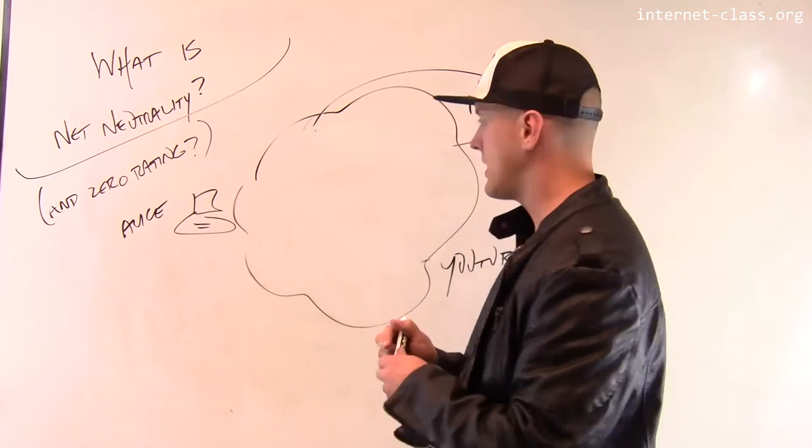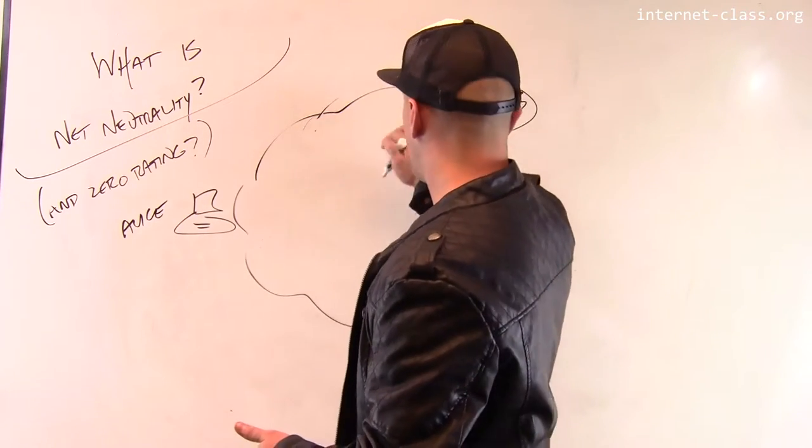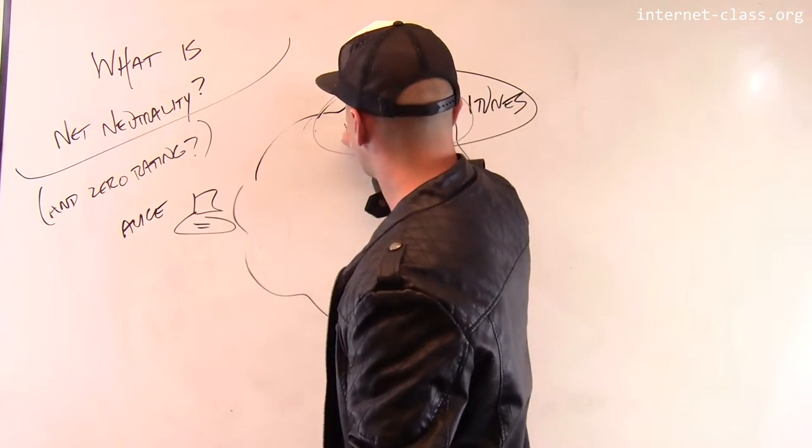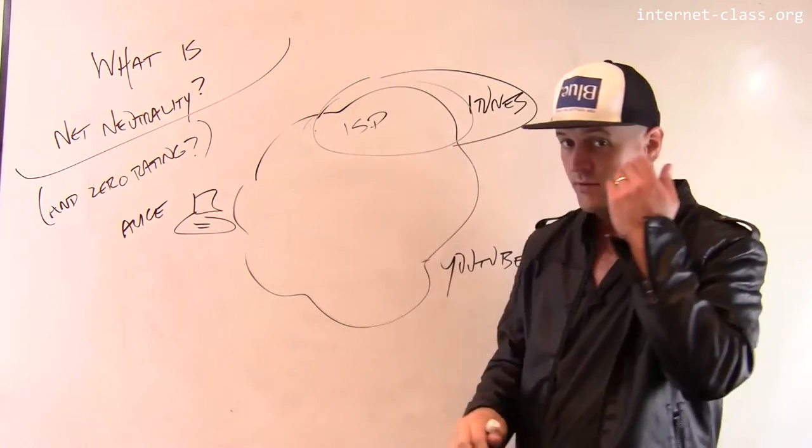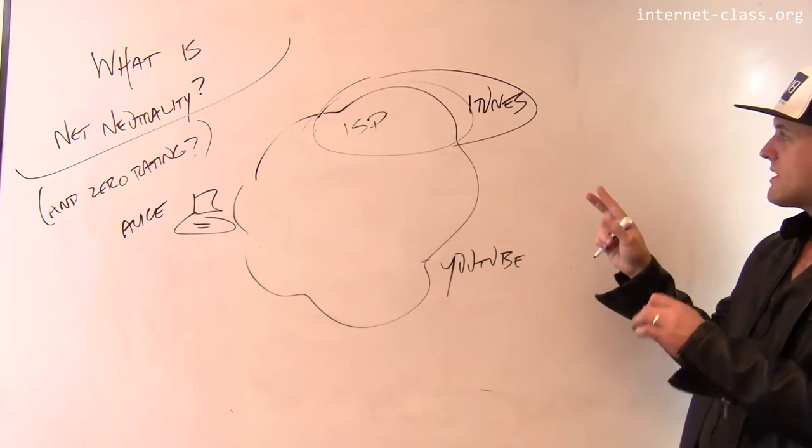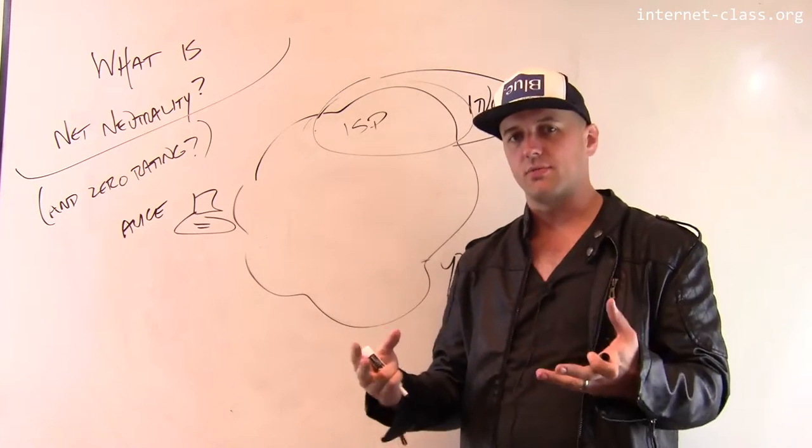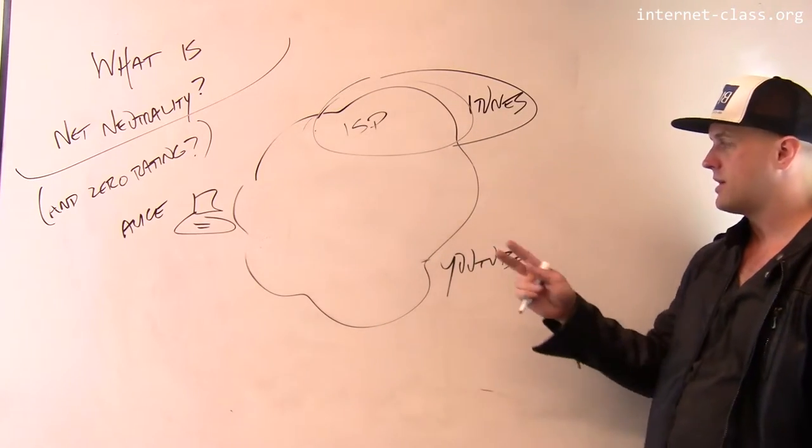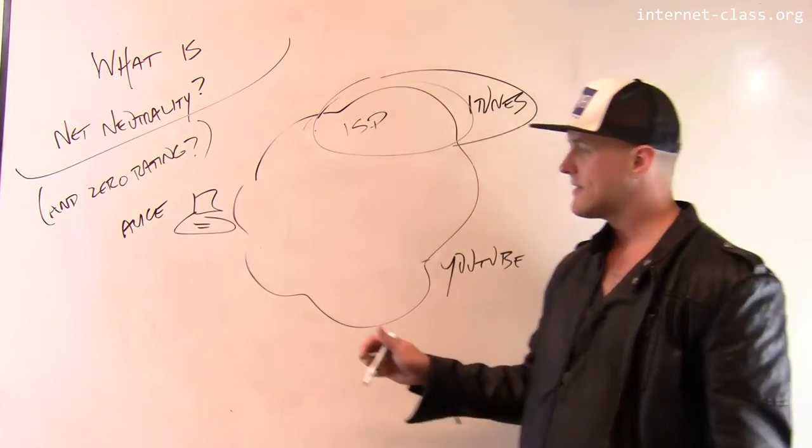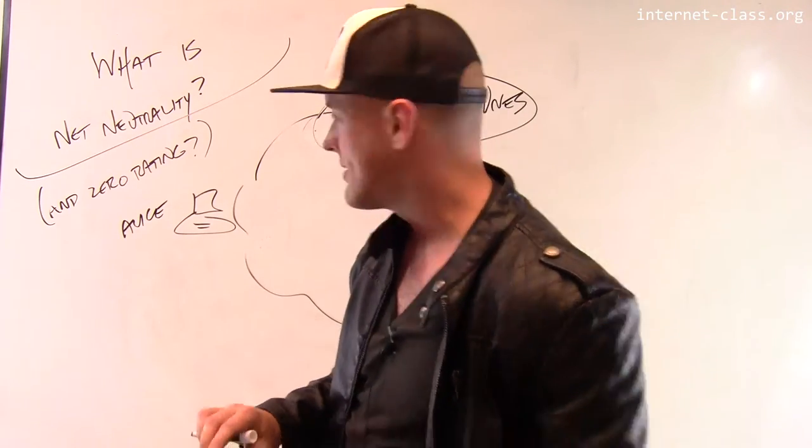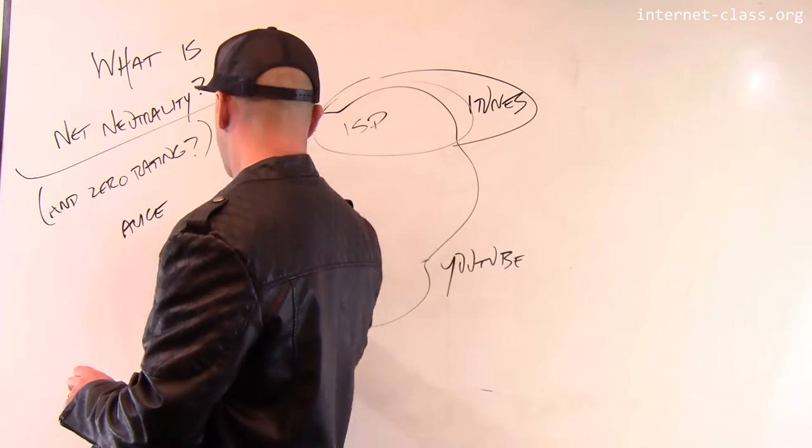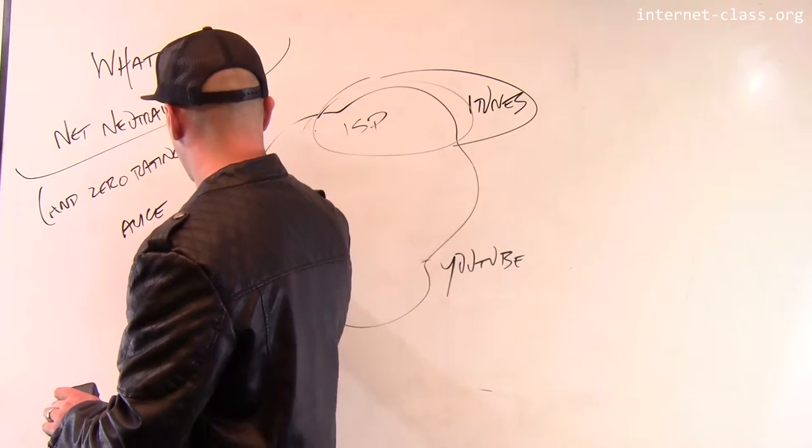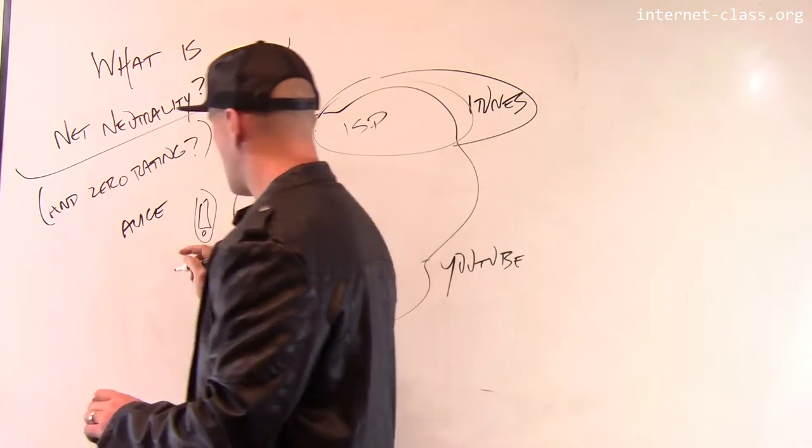So what is zero rating? Let's imagine that we have the same pre-existing relationship. And I'm not trying to pick on iTunes here. Please don't sue me, Apple. But let's say that the ISP has some sort of relationship with iTunes that is causing them to want to prefer iTunes over YouTube. And let's say that Alice is not on her desktop here or her laptop. Let's say she's using a smartphone and she's connected to a mobile data network.